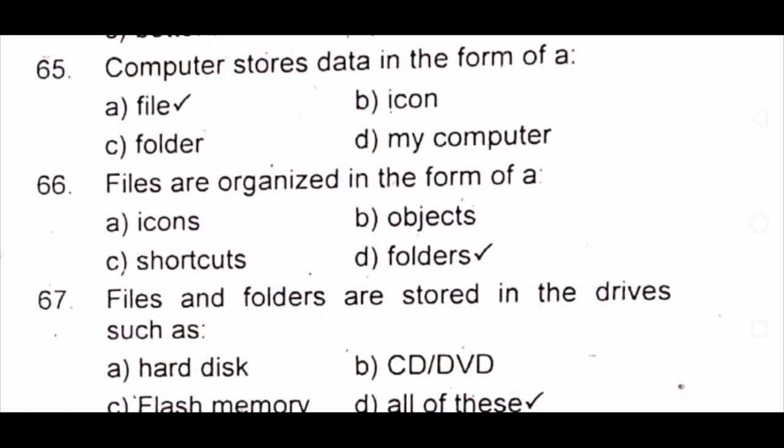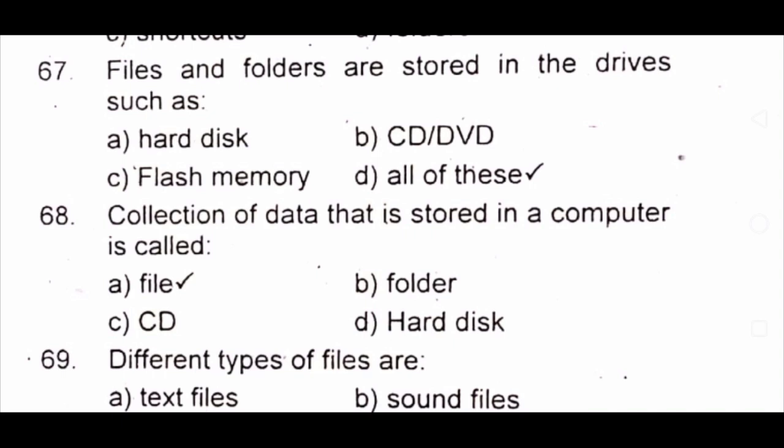Question 66: Files are organized in the form of A) icons B) objects C) shortcuts D) folders. The answer is D) folders. Question 67: Files and folders are stored in drives such as A) hard disk B) CD or DVD C) flash memory D) all of these. The answer is D) all of these.